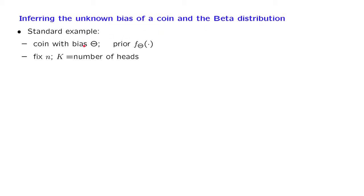We have a coin with a certain bias between 0 and 1, but the bias is unknown. Consistent with the Bayesian philosophy, we treat this unknown bias as a random variable and assign a prior probability distribution to it. We flip this coin n times independently, where n is some positive integer, and we record the number of heads obtained. On the basis of this random variable, we would like to make inferences about theta.